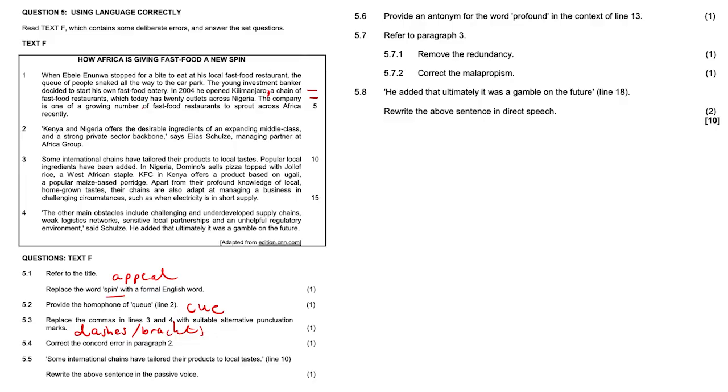5.4, there's a concord error in paragraph two. So feel free to pause the video and try to solve it on your own. So 'Kenya and Nigeria offers'—it should just be 'offer.' We are dealing with two countries here, so if it was just Kenya, then Kenya offers their desirable ingredients. But if it's Kenya and Nigeria, Kenya and Nigeria offer. So from 'offers' to 'offer'—this is how you should write it in your exam: 'offers' to drop the 's' there.